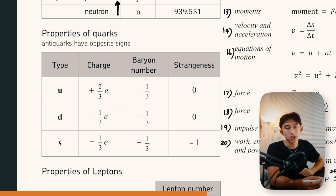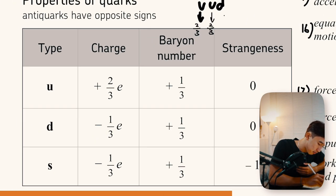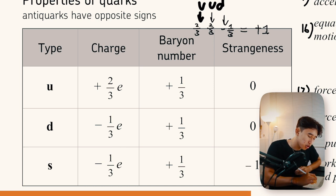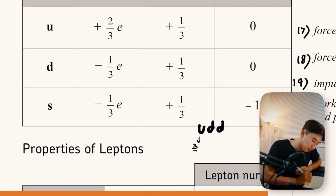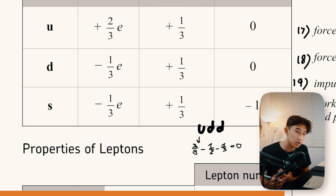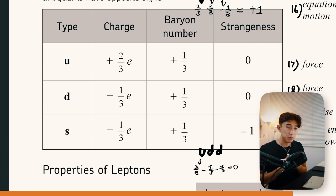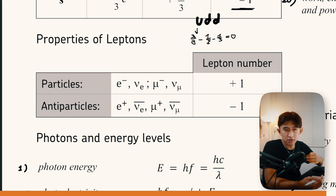Use the quark properties table when figuring out quark configurations. For example, the proton is up-up-down: up is +2/3 and down is −1/3, giving +1 charge. The neutron is up-down-down: 2/3 − 1/3 − 1/3 = 0, giving neutral charge. For mesons, the baryon number is always zero because they are composed of a quark and an anti-quark, giving +1/3 − 1/3 = 0.